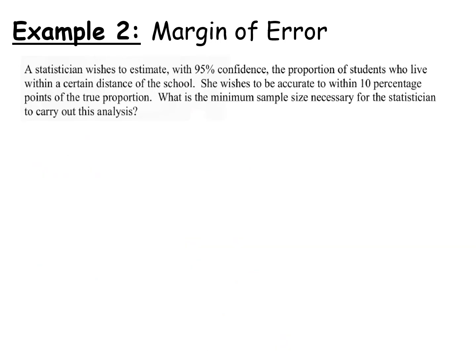So let's take another margin of error question. A statistician wishes to estimate with 95% confidence the proportion of students who live within a certain distance of a school. She wishes to be accurate within 10 percentage points. Now this is important, within 10 percentage points. What is the minimum sample size necessary for the statistician to carry out the analysis?